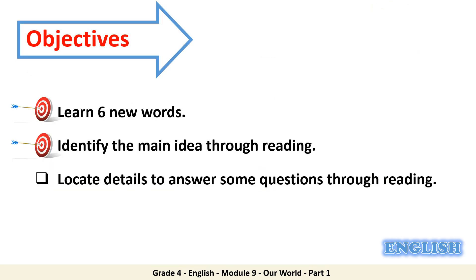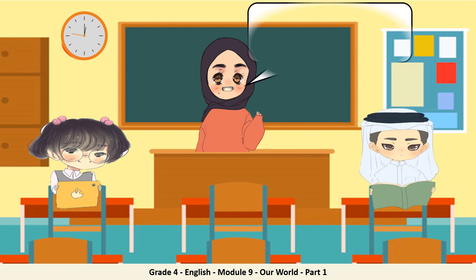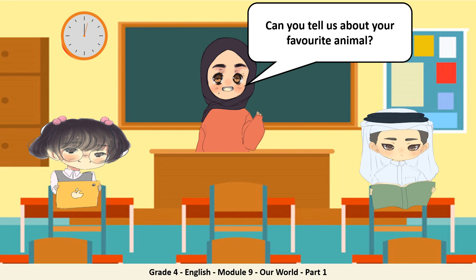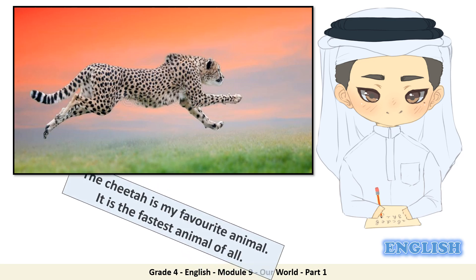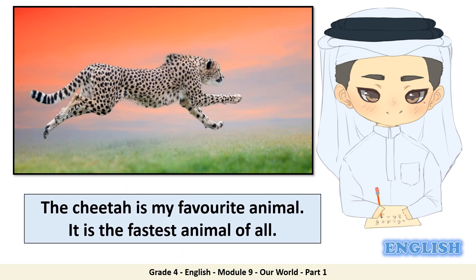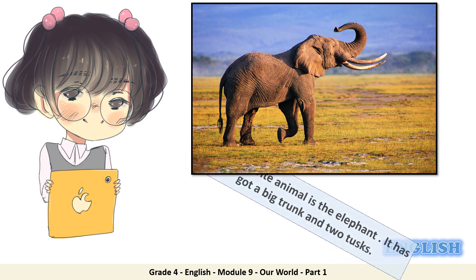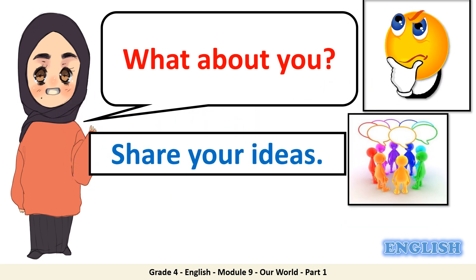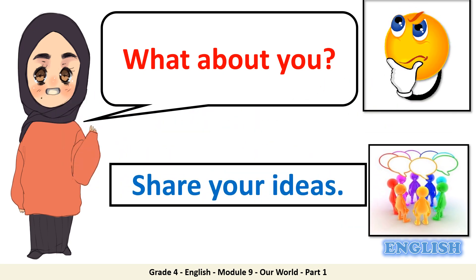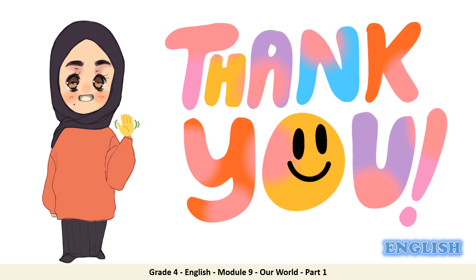Great job, everyone. Now you have completed all your objectives. Can you tell us about your favorite animal? Let's hear from our friends Ahmed and Noura. The cheetah is my favorite animal — it is the fastest animal of all. My favorite animal is the elephant; it has got a big trunk and two tusks. What about you? Don't forget to share your ideas with your friends and teacher. Now it's time to scan the QR and play the game. Thank you and see you next time.